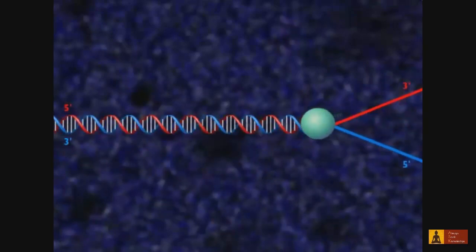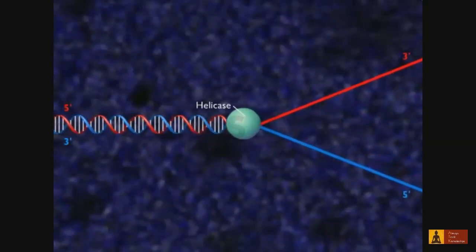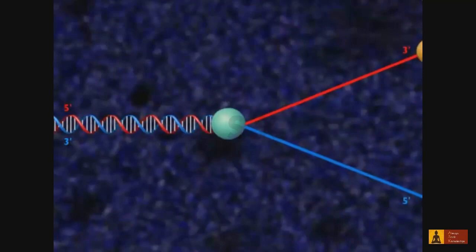DNA replication begins when helicase unwinds a segment of the DNA and breaks the hydrogen bonds between the two complementary strands of DNA.